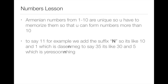Numbers lesson: Armenian numbers from 1 to 10 are unique so you have to memorize them. Once you do, you can form numbers above 10 by adding the suffix -and. For example, 11 is like saying 10 and 1 — 'das meg', where 'das' is 10 and 'meg' is 1.